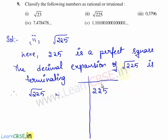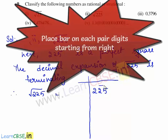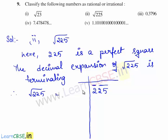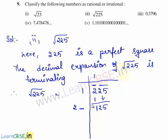We place bars on each pair of digits starting from the left, obtaining 2 pairs: 2 and 25. The nearest square for 2 is 1, since 1 × 1 = 1, giving a remainder of 1. We bring down the next pair, 25, making the new dividend 125. To obtain the new divisor, we double the quotient: 1 becomes 2 with a blank beside it. We think of a number such that the new divisor multiplied by that digit gives a result less than or equal to 125.